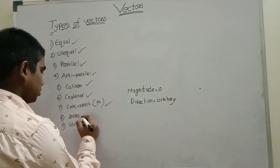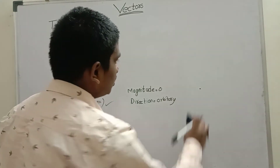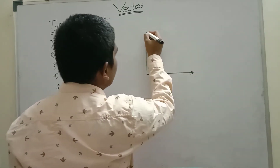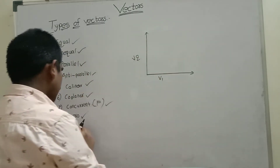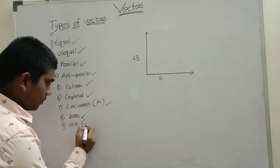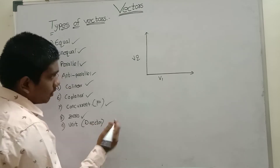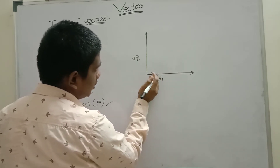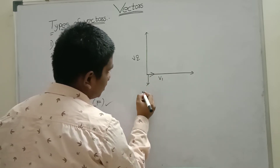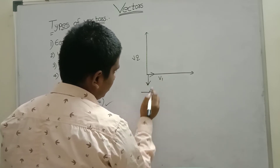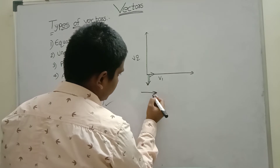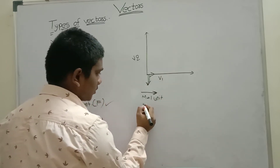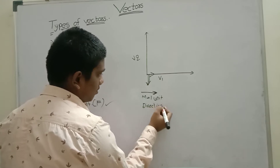Unit vector helps us find the direction of any vector. We differentiate the vector into one single unit — this part is called unit vector. Its magnitude is 1 unit and direction may be anything.